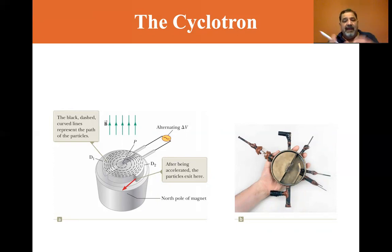you have these two D, they're called Ds. You have D1, D2, and there's a gap in between, and there's an alternating voltage between the two. And so as a particle, there's a magnetic field, the North pole of the magnet is facing up. So this particle gets, as it's first entered, it's given a radius. And the radius is enlarged. Every time you cross the gap, you enlarge the radius and you increase its kinetic energy. So the black dash curve lines represent the path of the particle.